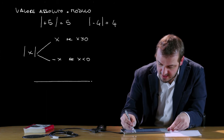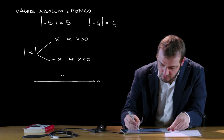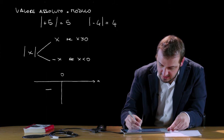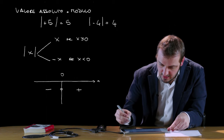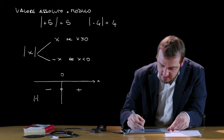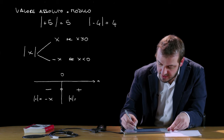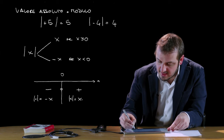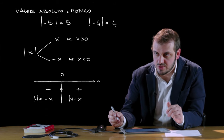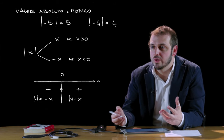Ragionando con un asse orientato, dove riportiamo i valori della x, qui c'è 0, qui avremo i valori negativi e qui i valori positivi della x, qui ovviamente si annulla la nostra variabile. Il modulo di x in questa zona risulta essere pari a meno x, il modulo di x in questa zona risulterà evidentemente essere pari alla variabile stessa, ossia a x, al suo argomento.